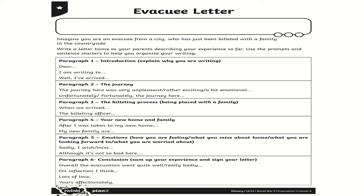Then you can move on to paragraph three, which is the billeting process — that's how you were placed with your host family. Here are a couple of sentence opener ideas: 'When we arrived, the billeting officer...' I would refer you to go back to Letters from the Lighthouse if you're not too sure — give those particular chapters another listen to remind yourself of what happened. Olive and Cliff got off the bus, were taken to a hall, and there were ladies there who wanted various children to work on their farms and help in their shops. They could choose the children they wanted, and Olive and Cliff were left as the last ones to be chosen.